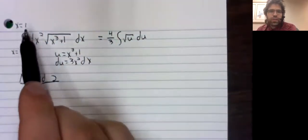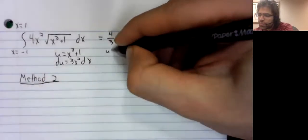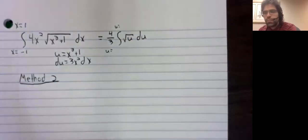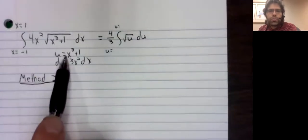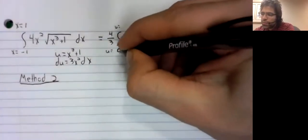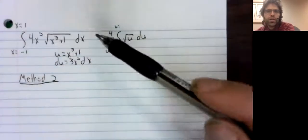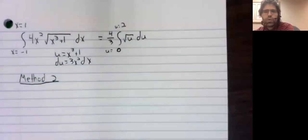Remember how this works. Here, these limits of integration correspond to x. Here, they correspond to u. When x equals negative one, u is negative one cubed plus one, which is zero. When x is one, u is one cubed plus one, or two.